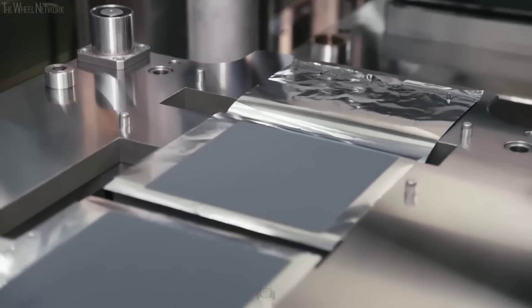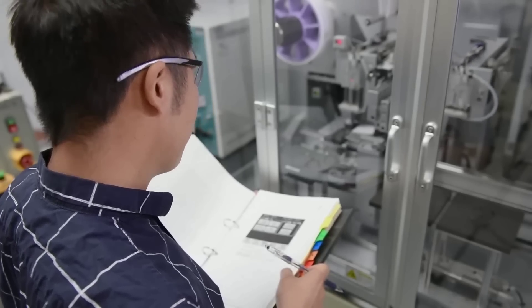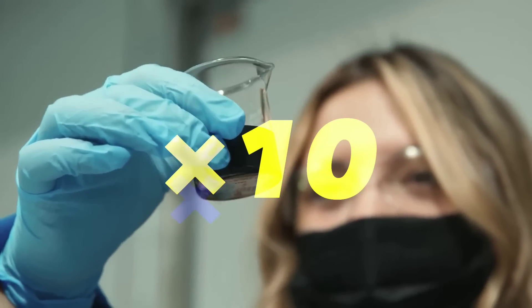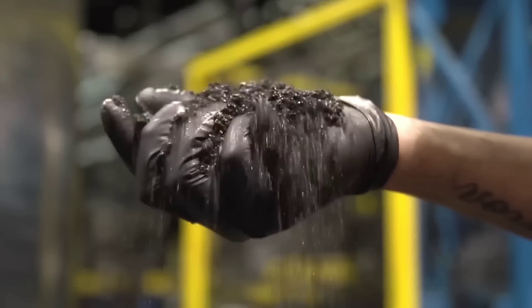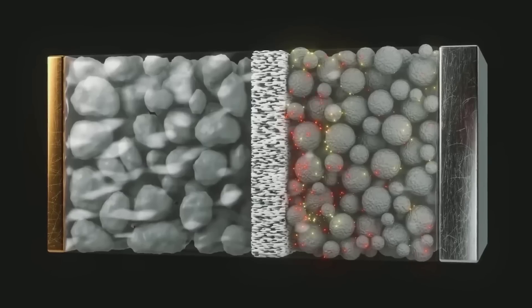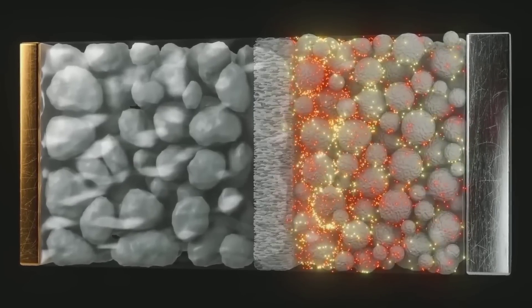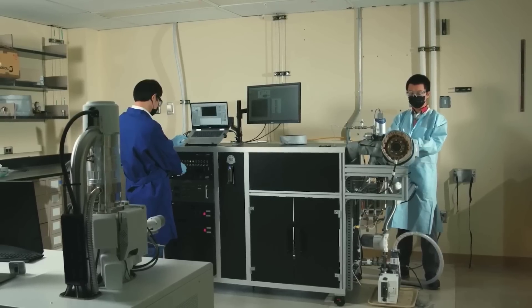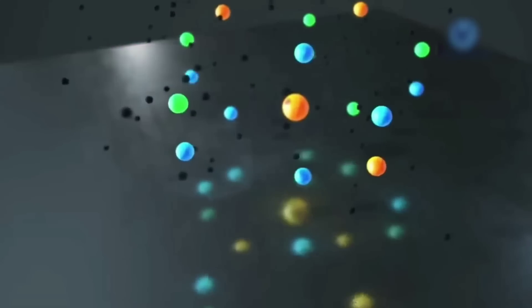Silicon, on the other hand, has a much higher capacity to store lithium ions than graphite. In fact, silicon can store up to 10 times more lithium ions than graphite per unit mass. This means that using silicon as an anode material could significantly increase the energy density of the battery, which translates into longer run time and higher power output.